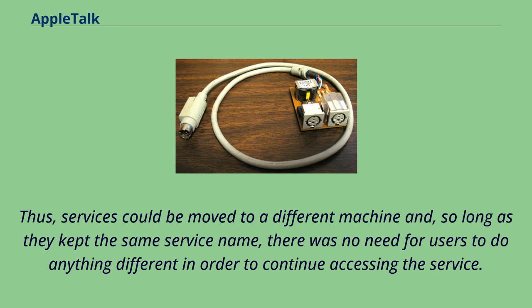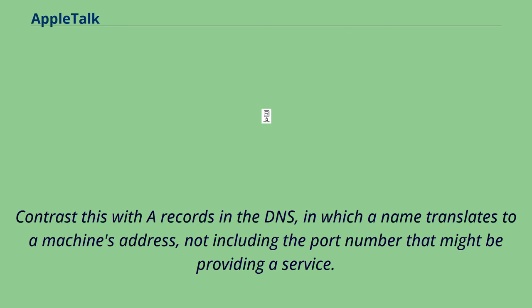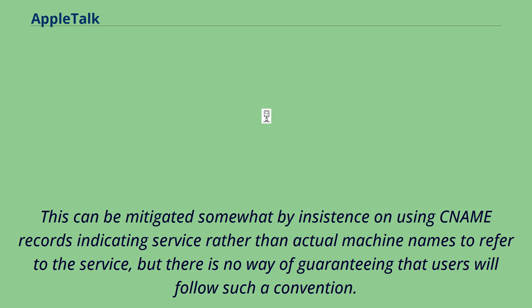Contrast this with A records in DNS, in which a name translates to a machine's address, not including the port number that might be providing a service. Thus, if people are accustomed to using a particular machine name to access a particular service, their access will break when the service is moved to a different machine. This can be mitigated somewhat by using CNAME records indicating service rather than actual machine names, but there is no way of guaranteeing users will follow such a convention. Some newer protocols, such as Kerberos and Active Directory, use DNS SRV records to identify services by name, which is much closer to the AppleTalk model.